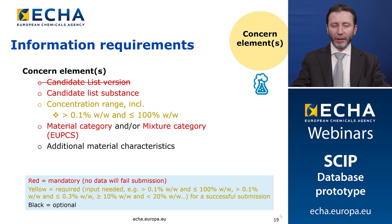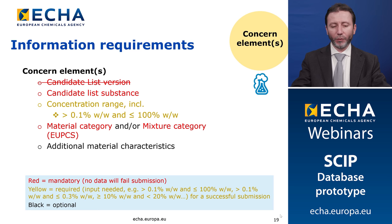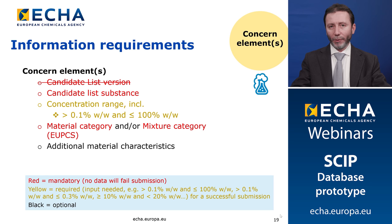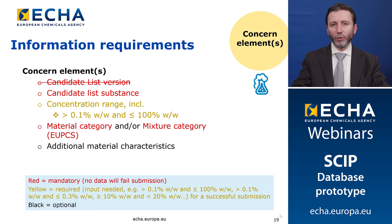You can also provide additional information about the material characteristics, which will be useful for waste operators and can help to better identify the material your article is made of. If you have all this information, you are ready to prepare and submit your SCIP notifications. If you don't have all the information needed, we invite and encourage you to request this information from your suppliers and then start preparing your notifications using the SCIP prototype.